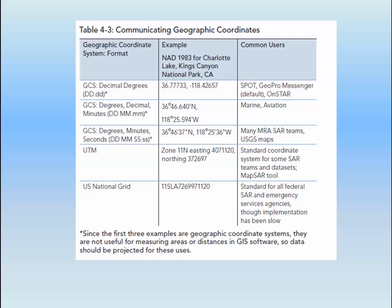Next is degrees decimal minutes, or DD.mm.mm. Here we show a latitude of 36 degrees and 46.640 minutes north by 118 degrees, 25.36 minutes west. Instead of north or west, the north can be assumed and say negative 118 degrees for the longitude. This type of coordinate system is often used by aviation — helicopters commonly use it — and marine vessels.